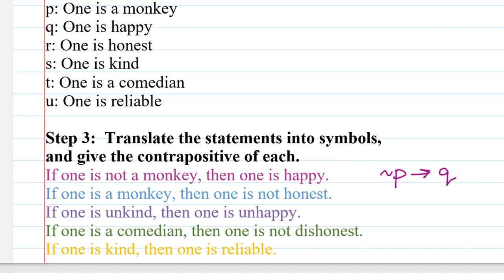The second statement, if one is a monkey, then one is not honest, is going to be P implies not R. The third statement, if one is unkind, then one is unhappy, means not kind, so not S, implies not happy, which is not Q. The fourth statement, if one is a comedian, then one is not dishonest, is going to be T for comedian, implies not dishonest means honest, so that would be R.